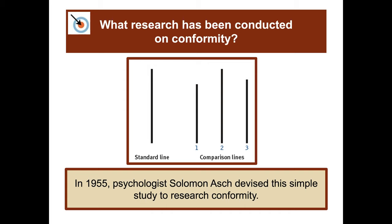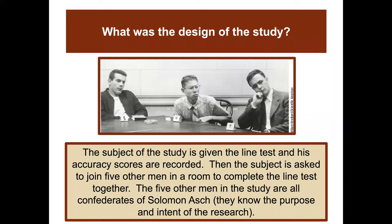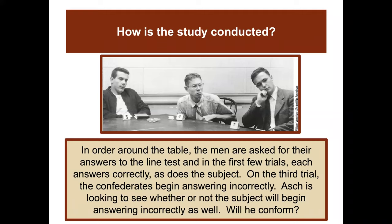Subjects were shown a standard line compared to three comparison lines — it's not hard to judge which one matches. Subjects were first given the line test alone and their accuracy was recorded. Then the subject was asked to join five other men in a room to complete the line test. The five other men were all confederates of Solomon Asch — they knew the purpose and intent of the study. In the first few trials, each answered correctly, as did the subject. On the third trial, the confederates began answering incorrectly. Asch was looking to see whether the subject would conform and begin answering incorrectly as well. There are original videos of the Asch conformity studies on YouTube.